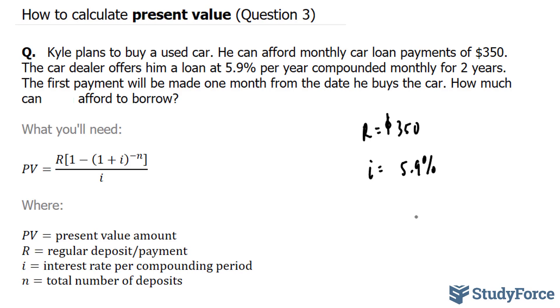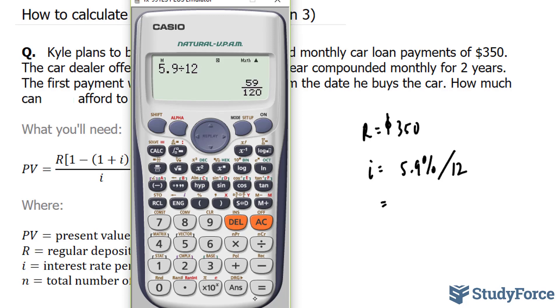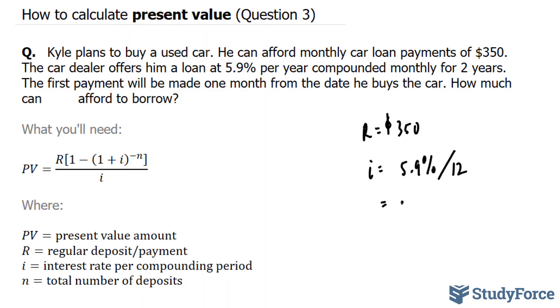If we do that, let's use our calculator. Here, 5.9 divided by 12 gives us 0.49% approximately. So this is how much interest that he is going to be paying every month.